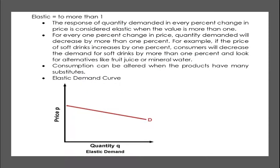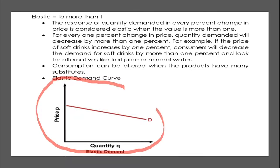Next, we have elastic demand. Elastic demand means that your midpoint answer for elasticity is more than one. The response of quantity demanded in every percent change in price is considered elastic when the value is more than one. For every one percent change in price, quantity demanded will decrease by more than one percent. For example, if the price of soft drinks increases by one percent, consumers will decrease their demand for soft drinks by more than one percent and look for alternatives like fruit juice or mineral water. Consumption can be altered when the product has many substitutes.